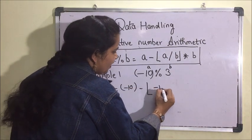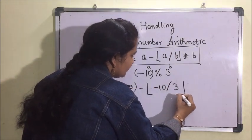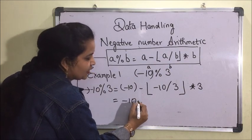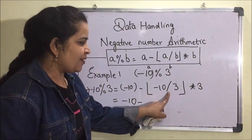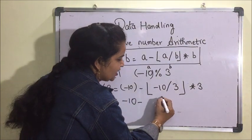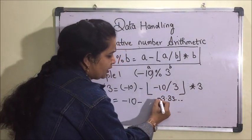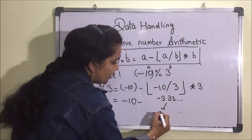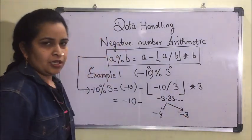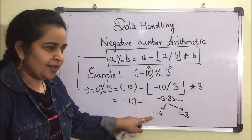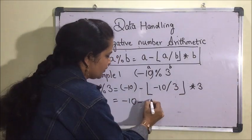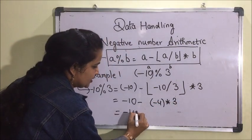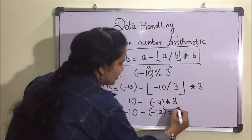Minus 10 divided by 3 equals minus 3.333. This negative number falls between minus 4 and minus 3. Since the floor function returns the lower value, the result is minus 4. So the expression becomes minus 10 minus (minus 4 multiplied by 3), which is minus 10 minus minus 12, giving us 2. So the modulo is 2.